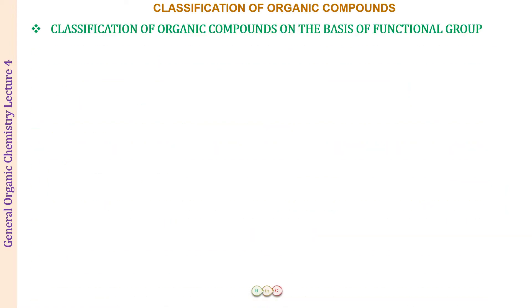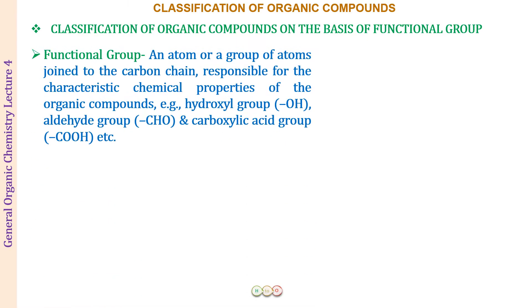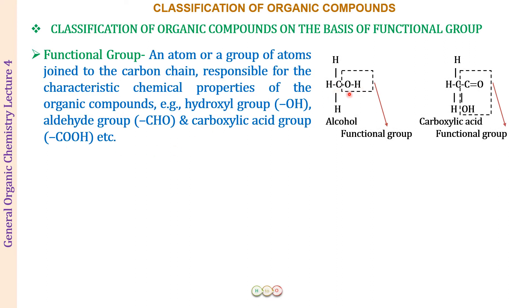Next, we classify the organic compounds on the basis of the functional group. A functional group is an atom or a group of atoms joined to the carbon chain responsible for the characteristic chemical properties of the organic compounds. For example, hydroxyl group OH, aldehyde group CHO, carboxylic acid group COOH. The molecule CH3OH is called methanol, an alcohol. Any molecule having OH as a functional group will be called an alcohol, and all alcohols will have similar chemical properties. Similarly, the functional group COOH is called the carboxylic acid functional group, and whenever this is present the molecules will be called carboxylic acids.